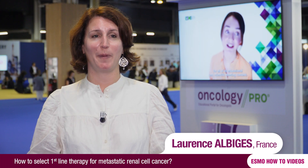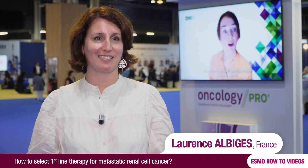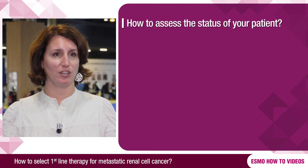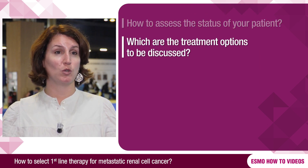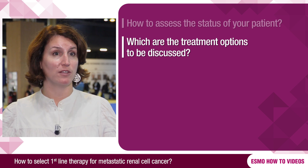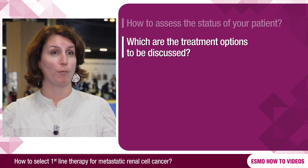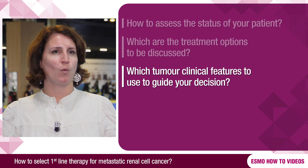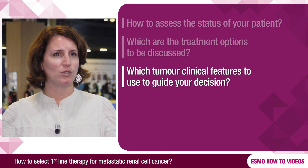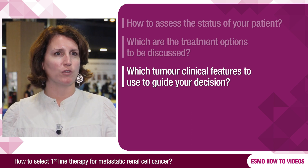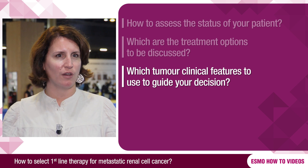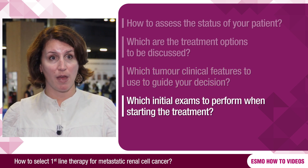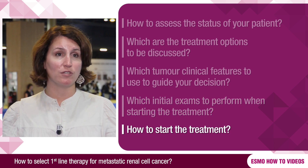How do you select your treatment for patients with metastatic renal cell carcinoma? The first step is to assess your patient. The second is to know what regimens are currently approved and available. The third would be what features guide me towards one or the other of the two strategies available. Then it will be the workup, and ultimately how do you start.